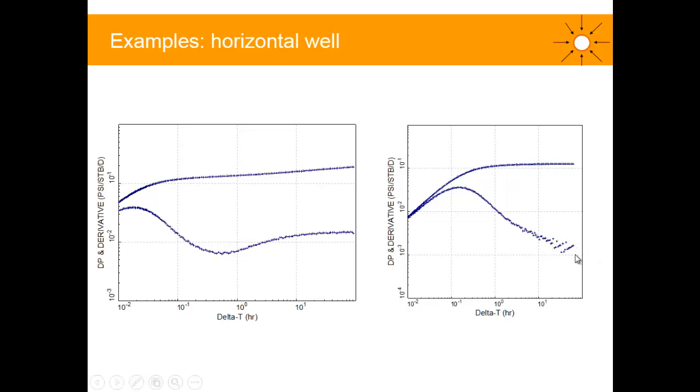And we don't see the horizontal radial flow regime. The test is too short. We also see these sort of straight lines here. That probably means that we've got an issue with data quality and with the gauge.